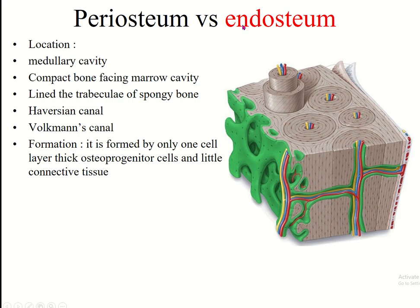Now, endosteum. Location: it lines the medullary cavity and the compact bone facing the medullary cavity. It also lines the trabeculae of spongy bone. It is also present within the Haversian canal and Volkmann's canal, which connect the Haversian canal to the medullary cavity. Formation: it is formed by only a single layer of osteoprogenitor cells and a little connective tissue.